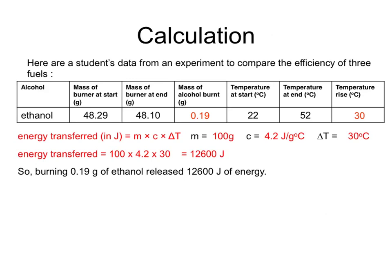The amount of alcohol burned is the difference between the mass at the start and the mass at the end — it's gone down by 0.19 grams. So 0.19 grams of fuel have burned to make 12,600 joules. We'll look at how we could work out the amount of energy transfer per gram a little bit later in this tutorial.